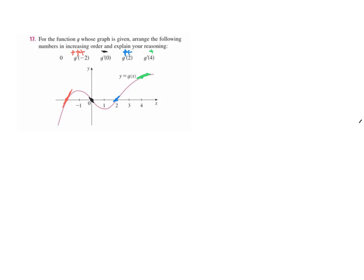So what's our final order? Our answer would be g'(0) is the only negative one, so that's less. Then we go through 0 first. Then we have g'(4) because that was the least positive one, then g'(2). Finally, the steepest one was g'(-2). And that's our final answer.